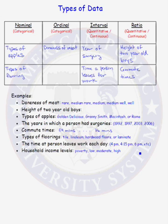Our last example is household income level: poverty level, low, moderate, or high. There is a natural ordering from low to high for this type of data, but differences don't make sense. Therefore, we have an ordinal type of data.